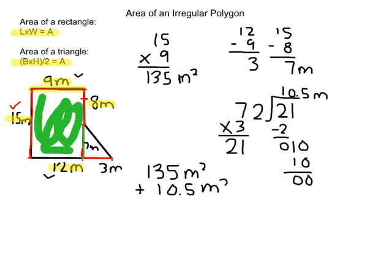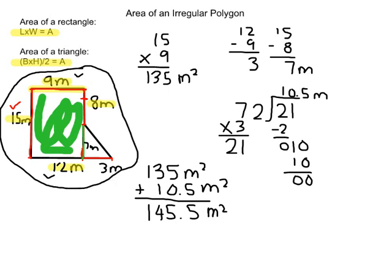We're not done yet — one last thing to do. Since we're finding the area of the rectangle and triangle together, we add them: 135 meters squared plus 10.5 meters squared. Adding these gives us a final answer of 145.5 meters squared, which is the entire area of this irregular polygon.